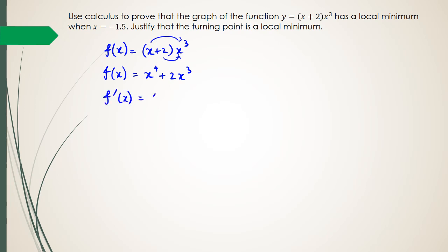Once I have this I can differentiate it, and I get f'(x) is equal to 4x cubed plus 6x squared. Now, if it's a turning point I need f'(x) to equal zero, so I set zero equal to f'(x), which means 4x cubed plus 6x squared equals zero.